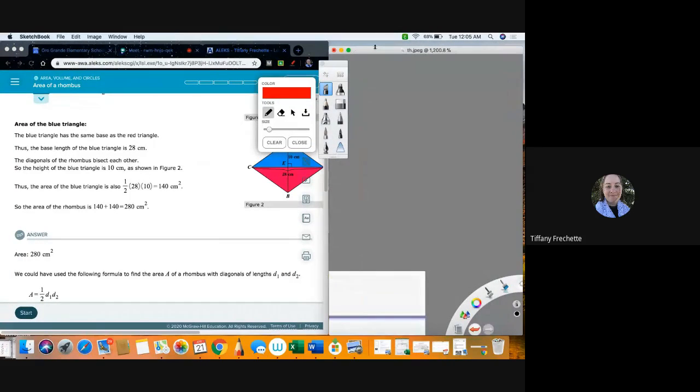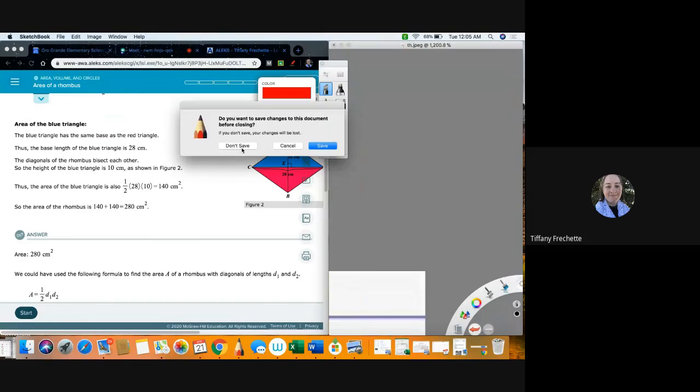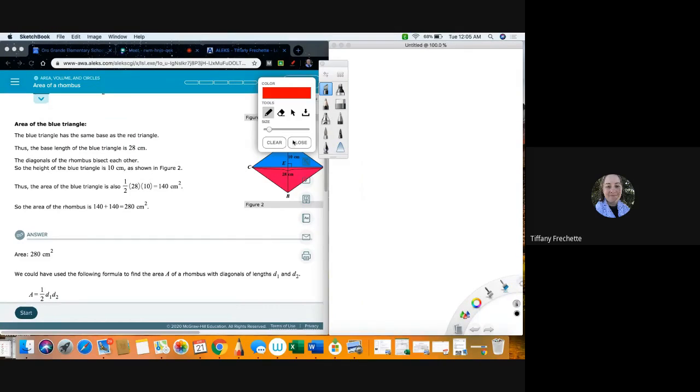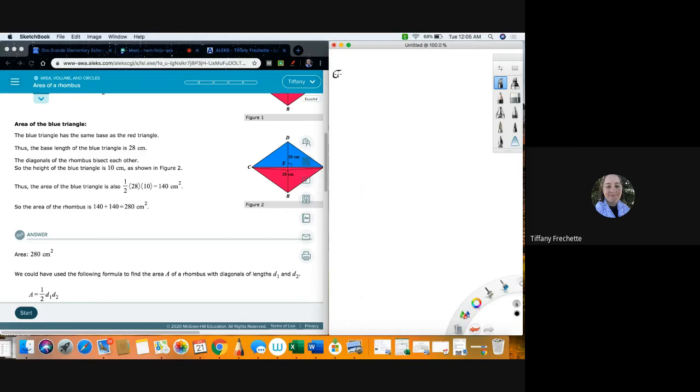I'm going to go ahead and use my whiteboard here. I'm going to write down that formula for us so that it's a little easier to use instead of using my pen tool here. So over here I'm going to write area equals one half diagonal one times diagonal two. So this is an option for the area of our rhombus.